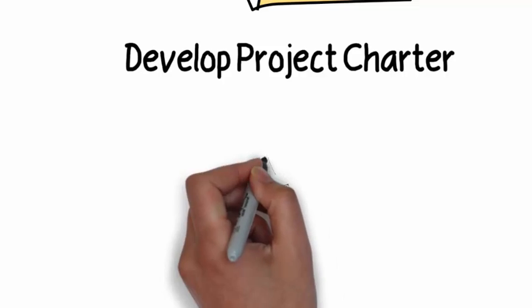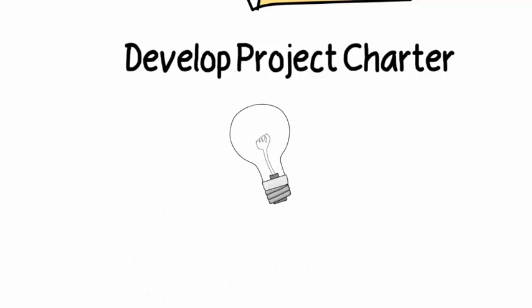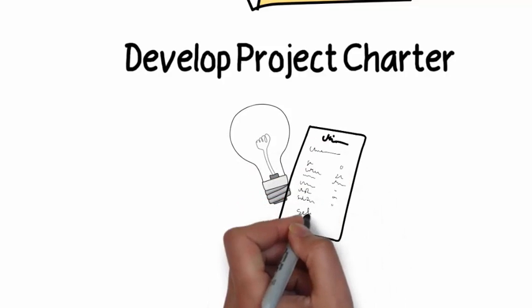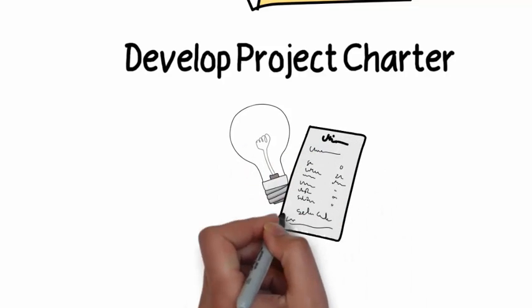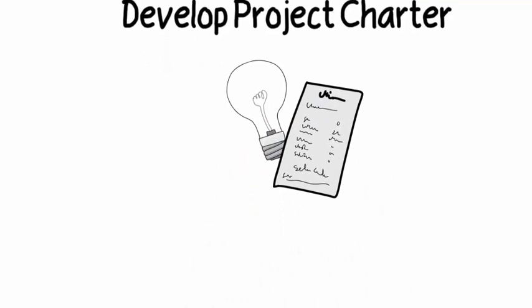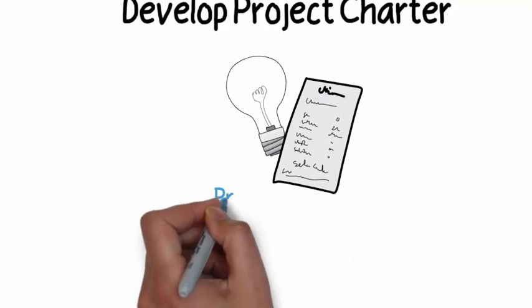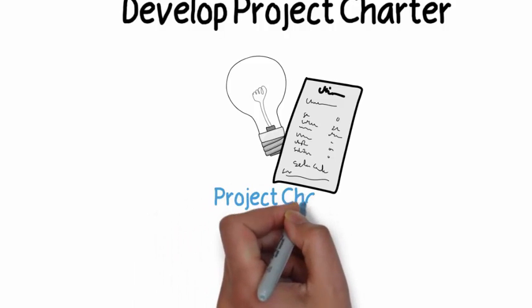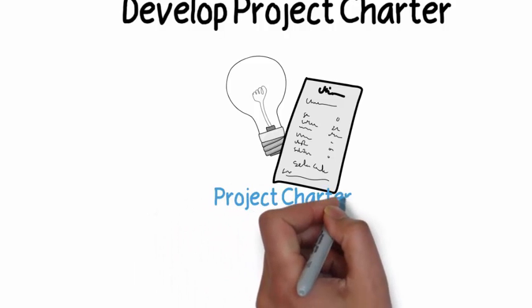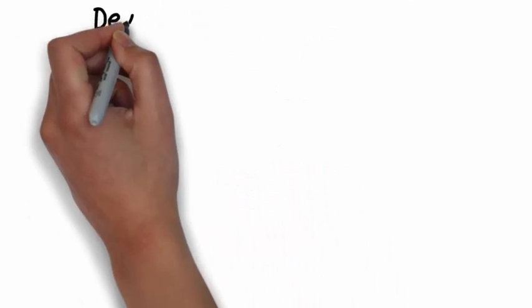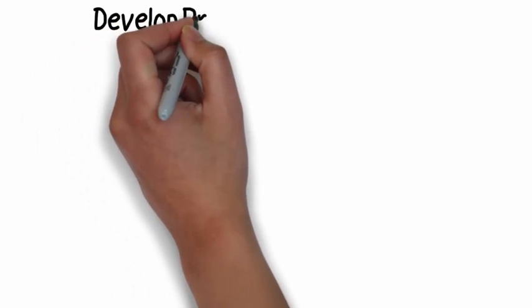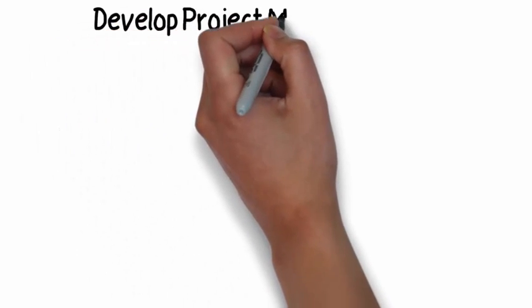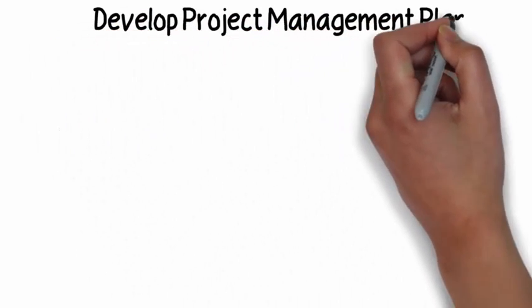Part of integration management is to develop a project charter. This is initiation — it's the ideas, the conception of the ideas. The business plan puts together essentially what we're trying to do, and then makes it official. Your output of develop project charter is, obviously, the project charter.